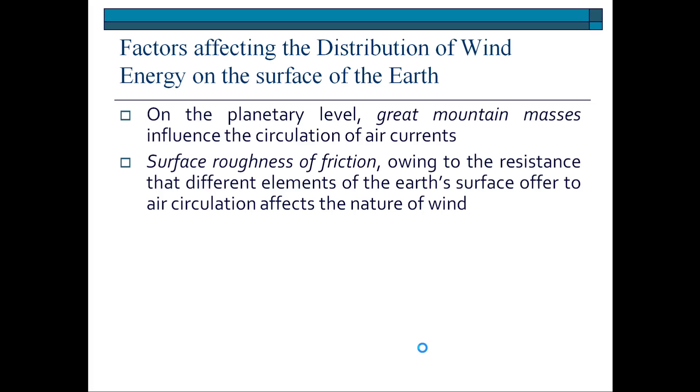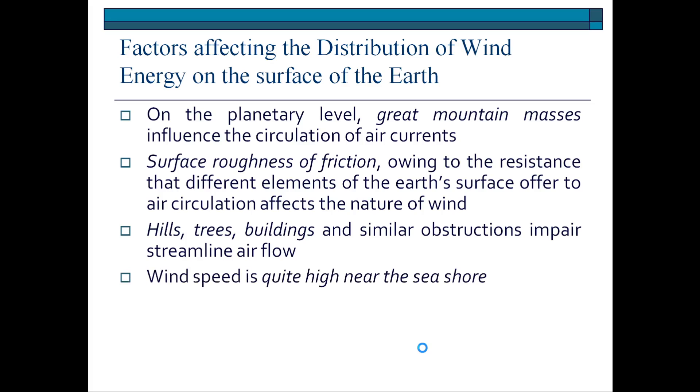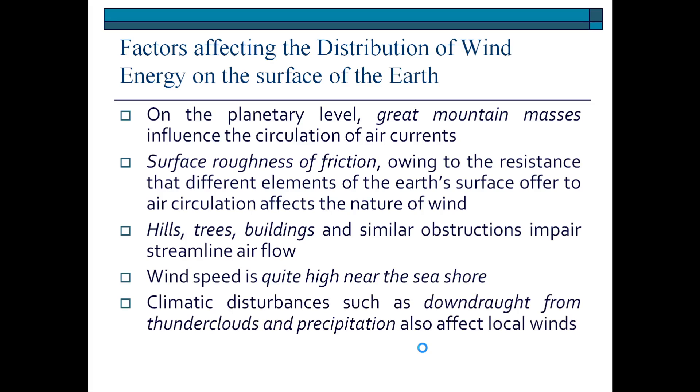The tall trees and rocks or the stones and vegetation, all these things will pose a hindrance to the movement of air circulation. Hills, trees, buildings and similar obstructions impair streamline air flow. There may have to flow in a zigzag manner; the streamline flow of air will be affected. You can get very large value of wind speed near the seashore where there is no hindrance. The downdraft climatic disturbances from thunder clouds and precipitation all these things will affect the local winds.